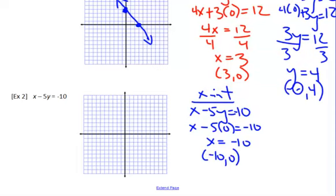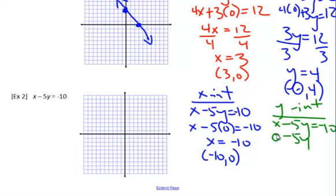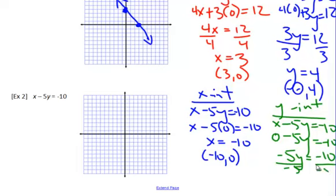For the y-intercept, x is going to be zero. So it's x minus 5y equals negative 10, and it becomes zero minus 5y equals negative 10. Here's where people get confused — zero minus 5y means the 5y is negative, so it's negative 5y equals negative 10. To isolate the variable, divide by negative 5, and y is actually going to be 2. We plugged zero in for x, so that point is (0, 2).